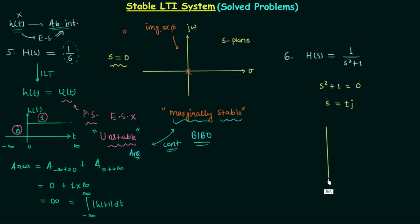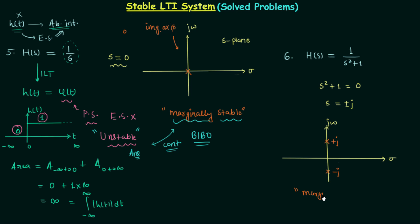On the s-plane, the first pole is at +j and the second at −j, both located on the imaginary axis. Therefore the system is marginally stable, and according to the BIBO criterion, the system is unstable.